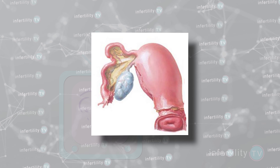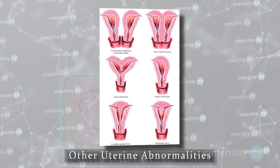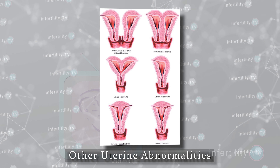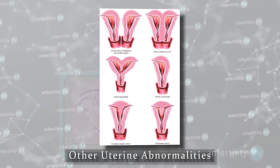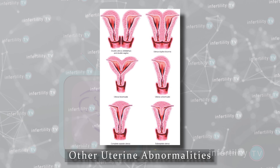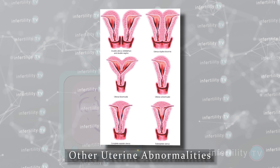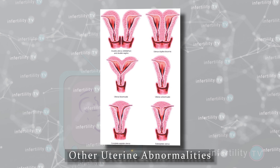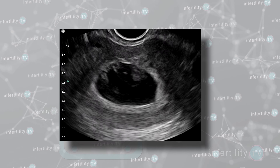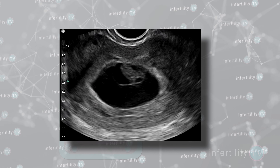This is called a unicornuate uterus. Women with these uterine abnormalities can still deliver a healthy live-born baby, but they do have a higher rate of problems. Women with these uterine abnormalities more commonly have infertility and miscarriages. They are also more likely to deliver too early and need a c-section for delivery.